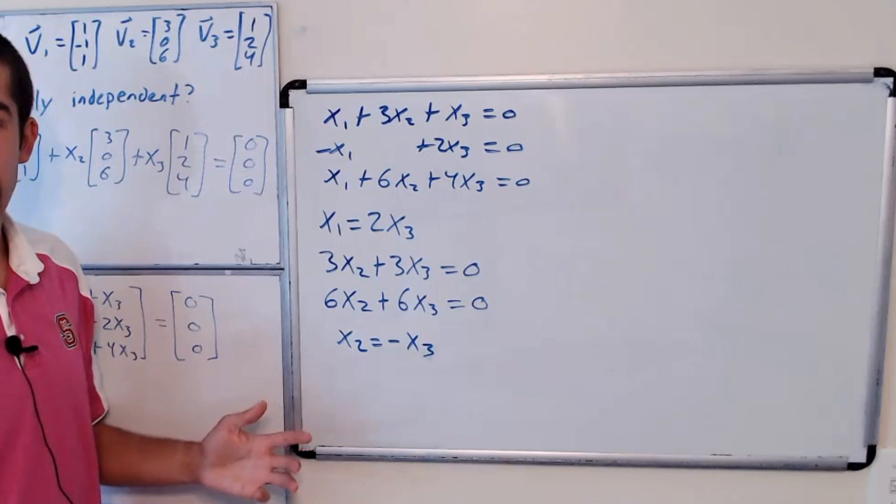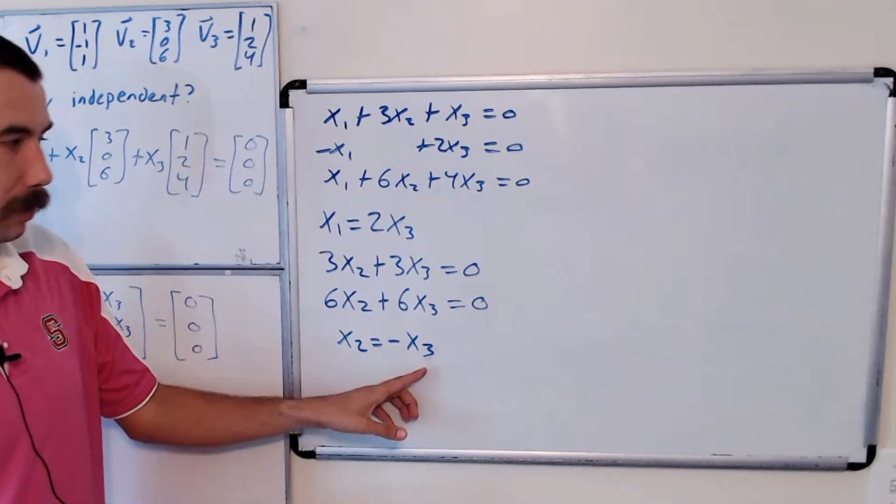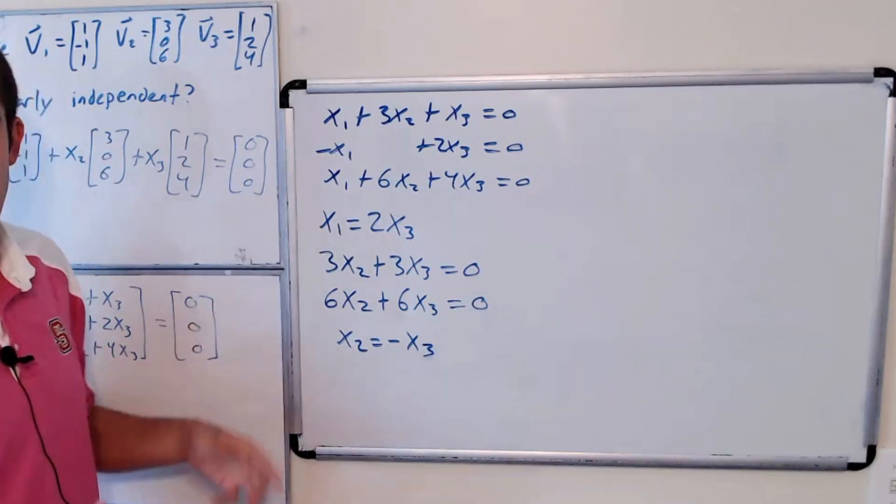So we can't find a unique solution. So we could plug in whatever value for x3 we would like, and that will give us a non-trivial solution.